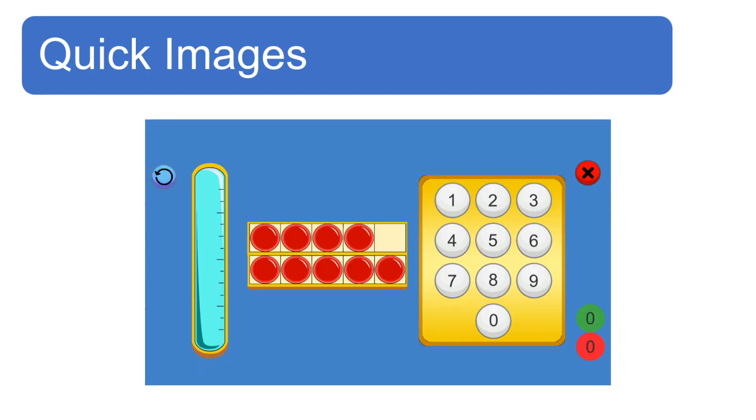Nakuha nyo ba ang sagot? Ang tamang sagot ay 9. Paano ninyo nalaman? Yung iba sa inyo, nakita siguro ang 4 at 5. Yung iba naman, napansin siguro na kulang lang ng isa para maging 10. Yan ang power ng 10 frames. Masasanay ang mga bata na makakita ng number relationships.